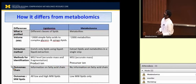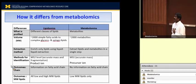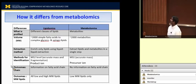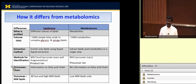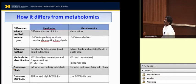Let us see how lipidomics differs from metabolomics. Metabolomics is the identification and quantification of metabolites including lipids. Lipidomics aims to identify and quantify different classes of lipids in biological systems. The molecular weight of metabolites is less than 2,000 Dalton, which includes amino acids, fatty acids, polyamines, carboxylic acids, pyrimidine metabolites, sugars, vitamins, etc. Lipids also fall below 2,000 Dalton in molecular weight, covering from simple fatty acids to complex glycerol and sphingolipids.